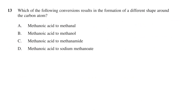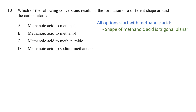Question 13 asks: which of the following conversions results in a different shape around the carbon atom? The options are: methanoic acid to methanal, methanoic acid to methanol, methanoic acid to methanamide, or methanoic acid to sodium methanoate. All options start with methanoic acid, so we need to consider the shape around its carbon atom. The shape of methanoic acid is trigonal planar.